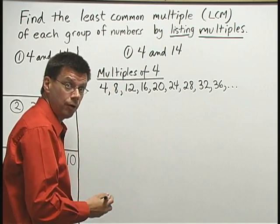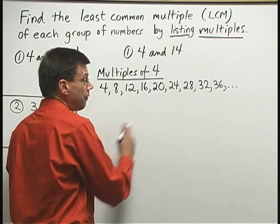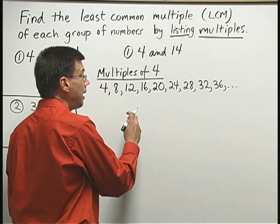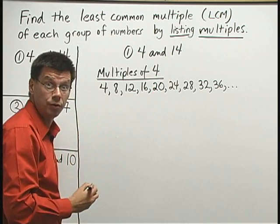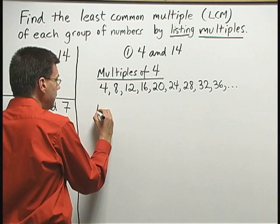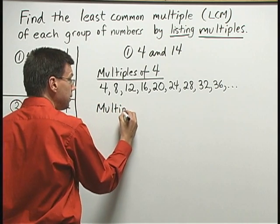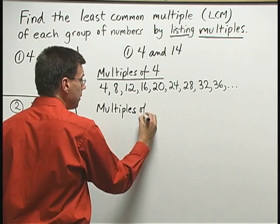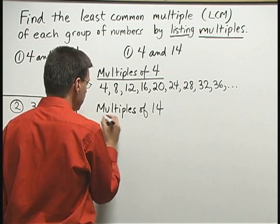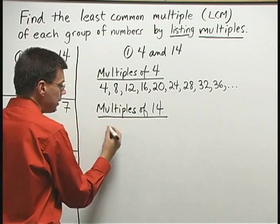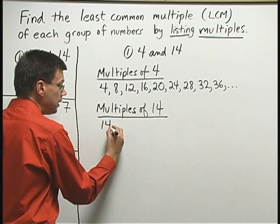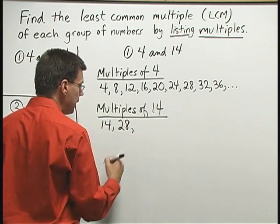If they go on further, there's a chance I might have to write more. Let's see what happens when we look at the multiples of 14. Now, I'll list some multiples of 14. 1 times 14 is 14, 2 times 14 is 28.